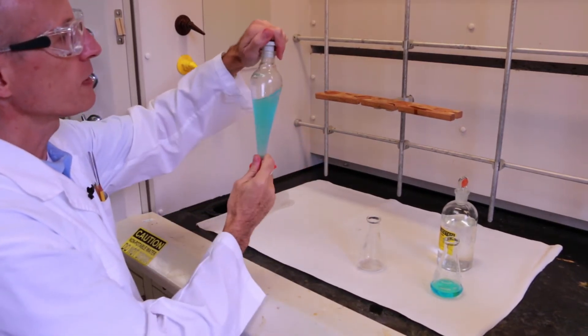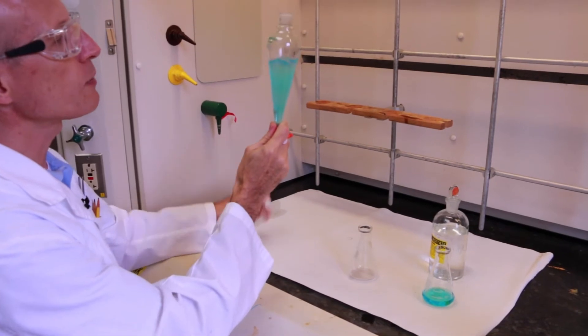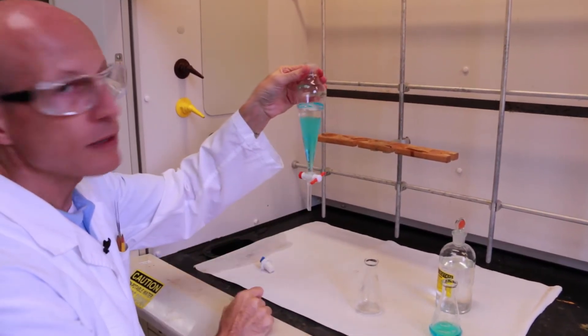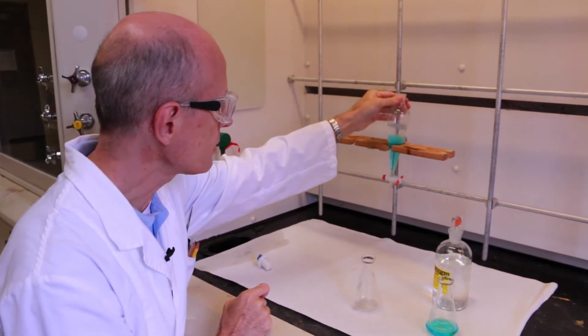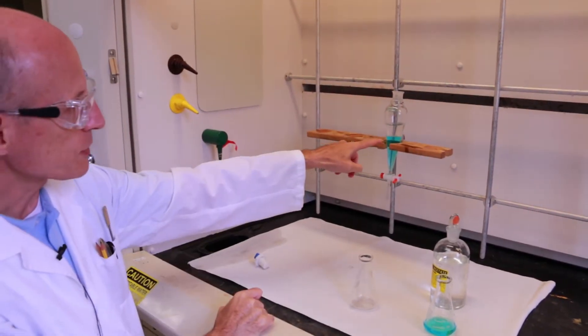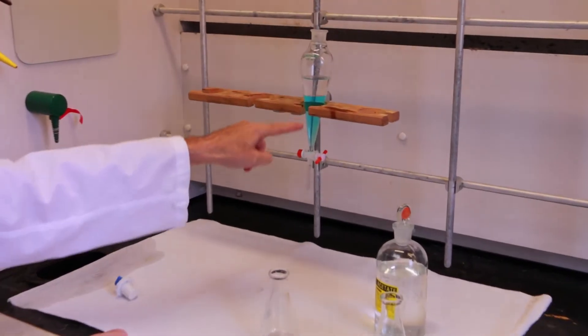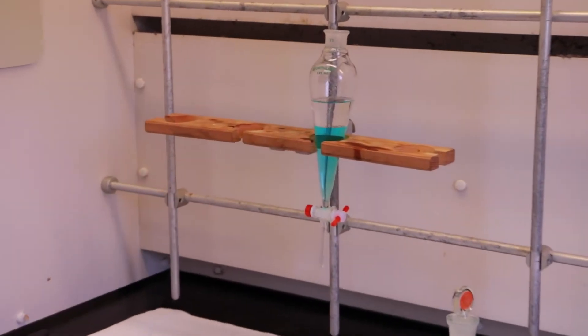Then you remove the stopper and you want to swirl it around to collect the droplets that are on the sides of the funnel and you hang it until the phases separate. And you can now see there's a nice clear separation between the blue phase and the colorless phase on top.